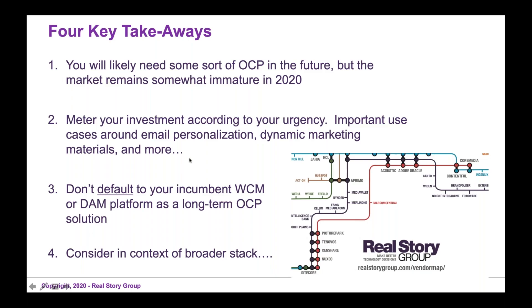There are really four key takeaways. One: you'll likely need some sort of OCP in the future if you're serious about omnichannel content management. But the market remains somewhat immature in 2020, so we're not suggesting you rush out today — although some of you have more urgent needs than others. You want to meter your investment according to your urgency. If there are important use cases around email personalization, dynamic marketing materials, and others that are important to you, then you probably do want to investigate this market in 2020. Either way, don't default to your incumbent web content manager or DAM platform as a long-term OCP solution, because many of them will prove unsuitable, even if they're providing a little bit of multi-channel goodness today. Finally, look at OCP in the context of your broader stack. Going full circle to another reference model with respect to your omnichannel stack: you still have that engagement tier at the top, and then in the row below, omnichannel content management — delivering core micro-content and experience via content components.